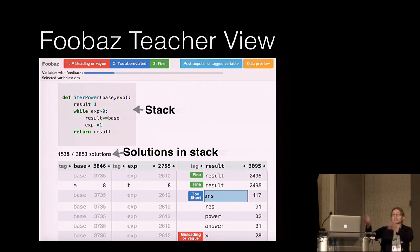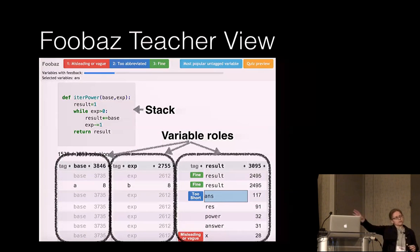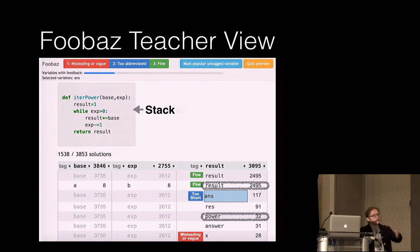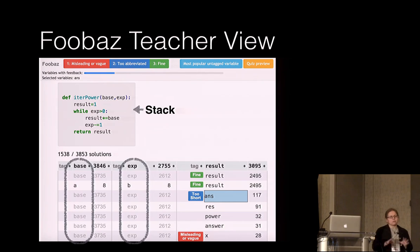In the teacher view, a stack shows how many solutions it contains relative to the total — in this case 1,500 out of 4,000. These solutions are all correct, but not all equal, since there are genuinely good and bad variable names. Each set of columns represents different variable roles in the solution. Teachers can annotate variable names as good or bad, see their relative prevalence, and view unique combinations per student. Variable names matching the provided template are grayed out, drawing attention to student-generated choices.